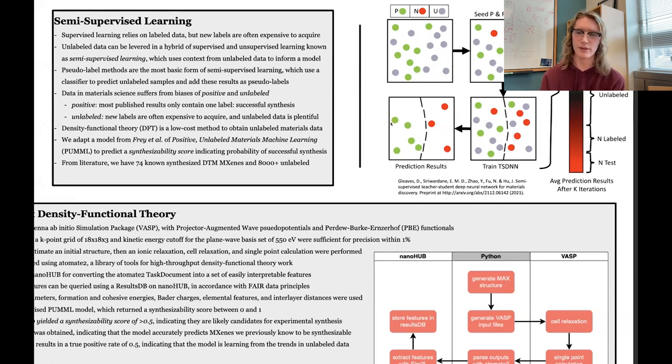The reason we're doing this is we have a unique machine learning problem where there are very few published examples of MXenes. When looking at double transition metal MXenes, we have around 70 examples out of this domain of 8,000 to 9,000 possible combinations.